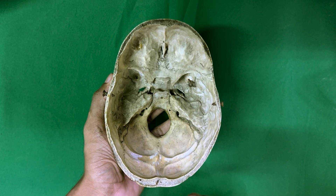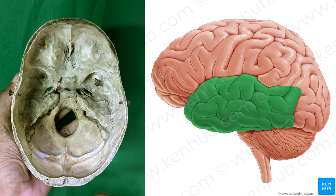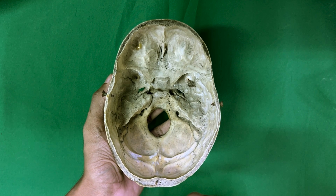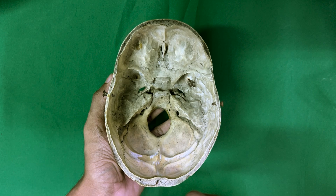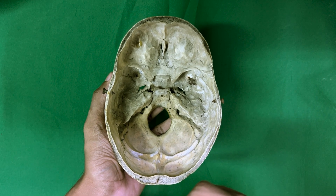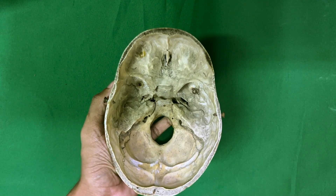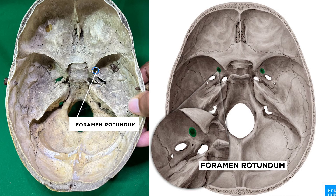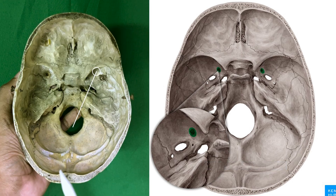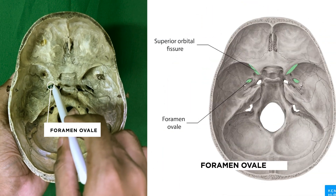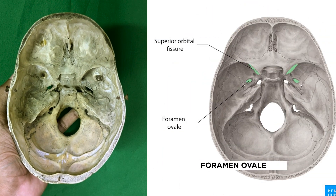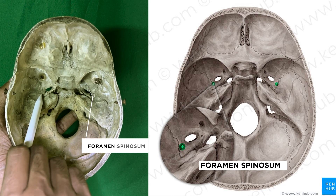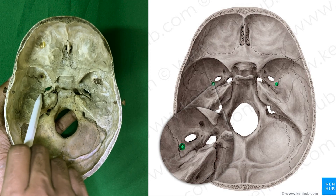The lateral area is deep and lodges the temporal lobe of the brain. It is related anteriorly to the orbit, laterally to the temporal fossa, and inferiorly to the infratemporal fossa. The superior orbital fissure opens anteriorly into the orbit. The greater wing of sphenoid presents the foramen rotundum leading anteriorly to the pterygopalatine fossa. The foramen ovale lies posterolateral to the foramen rotundum and leads inferiorly to the infratemporal fossa. The foramen spinosum lies posterolateral to the foramen ovale, which also leads inferiorly to the infratemporal fossa.